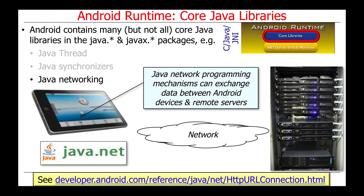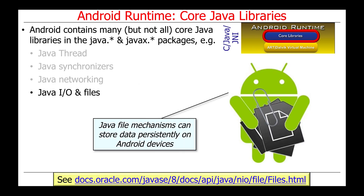There are also a number of other APIs available as part of core Java that support networking. These can be used to exchange data between Android devices or clients and various remote servers that typically execute out in the cloud. There are also mechanisms that perform various types of Java input and output operations, in particular operations that work on persistent files that can store data between runs of an application.